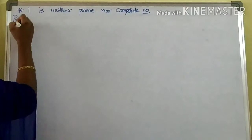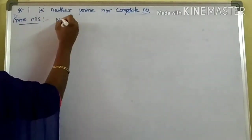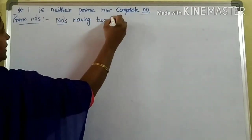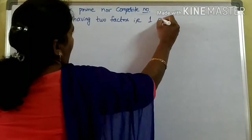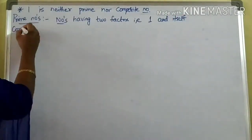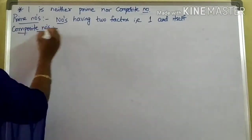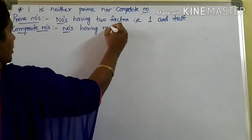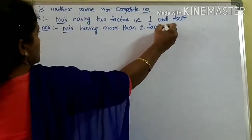Coming to the definitions: what are prime numbers? Prime numbers are numbers having two factors — the factors are nothing but one and itself. And what are composite numbers? Numbers having more than two factors are nothing but composite numbers.